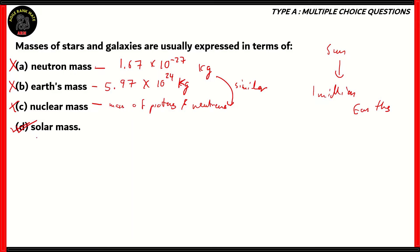The correct option is option D, solar mass. One solar mass unit is equal to 2 × 10³⁰ kg — a million times larger than Earth's mass. It's clear that using solar mass is the best way to compare masses of stars and galaxies because the sun is a star, and there are stars smaller and larger than it. Galaxies also contain stars, so the numbers wouldn't be as large as with the other three units. Therefore, option D, solar mass, is the correct answer.